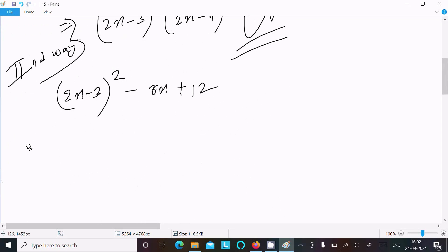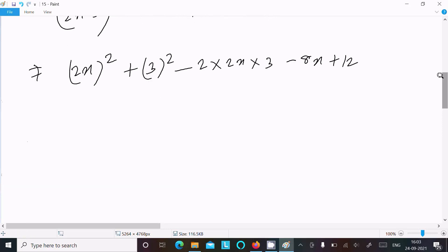If you are using here the whole square formula (a-b)² = a² + b² - 2ab, then here you can get (2x)² + 3² - 2×2x×3, then -8x + 12.